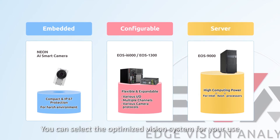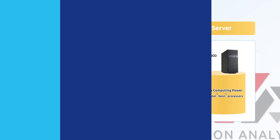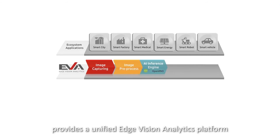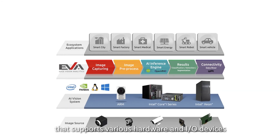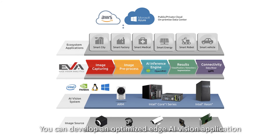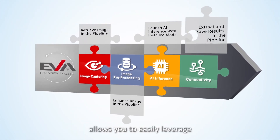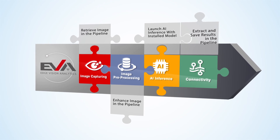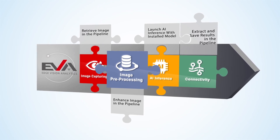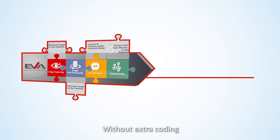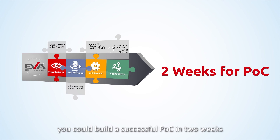You can select the optimized vision system for your use. No matter your application, the EVA software development kit provides a unified edge vision analytics platform that supports various hardware and I/O devices. You can develop and optimize edge AI vision applications without integration hassles. EVA's pipeline structure allows you to easily leverage ready-to-use plugins at each stage, including image capture, pre-processing, AI inference, and connectivity. Without extra coding, you could build a successful POC in two weeks.